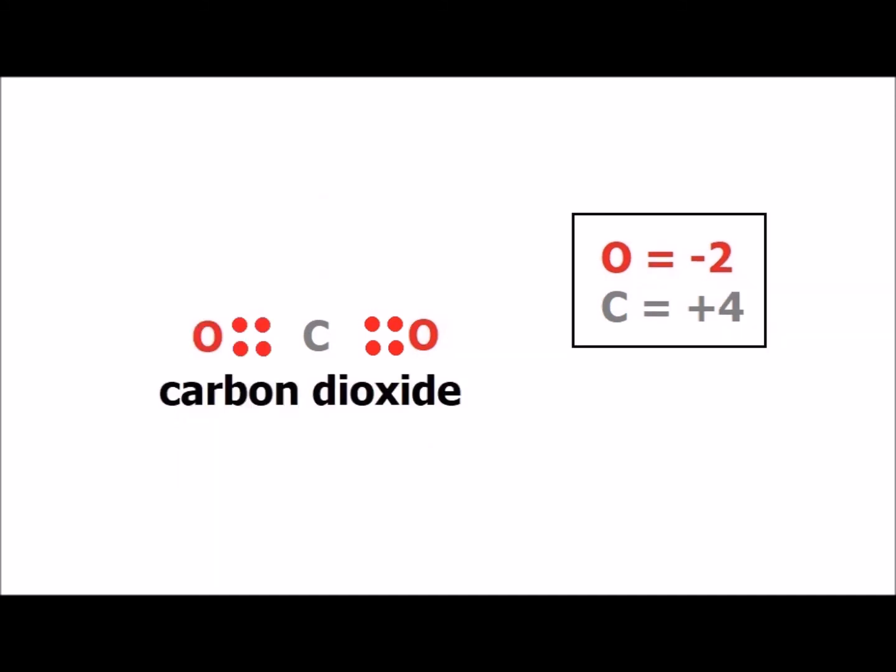In carbon dioxide, we have two carbon-oxygen double bonds, and since oxygen is more electronegative than carbon, all of the bonding electrons are colored red and counted towards oxygen. Since carbon started with four electrons and now has none, it must have lost four electrons, which is equivalent to a plus 4 charge, or a plus 4 oxidation number on carbon in carbon dioxide.